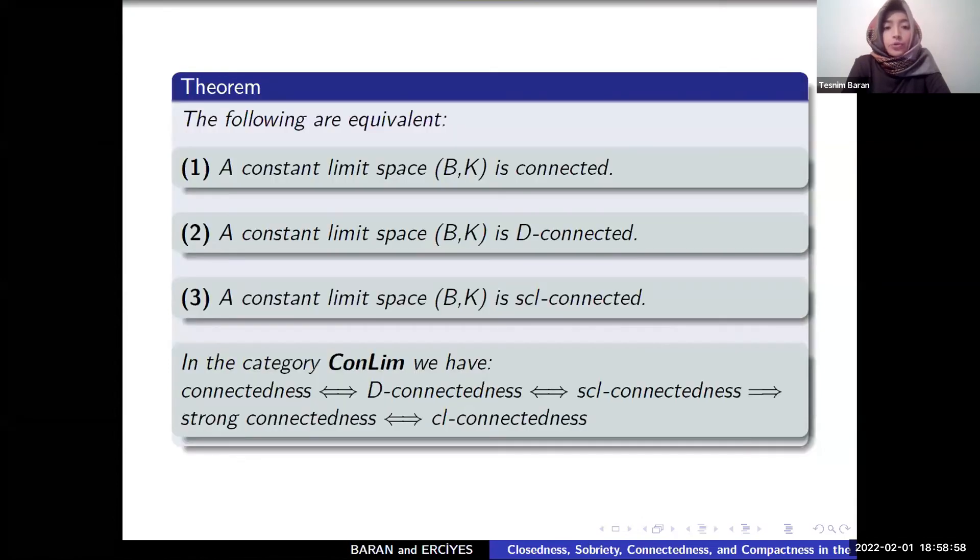And we proved the following are equal. A constant limit space (B,K) is connected, D-connected, and SDR connected. In the category, we have connectedness, D-connectedness, SDR connectedness are equal implies strong connectedness if and only if CL connectedness.